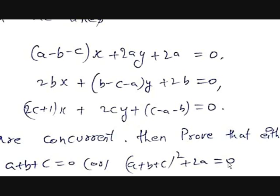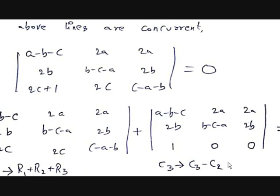To prove this, we take the determinant and use properties of determinants. If these lines are concurrent, the determinant of [a-b-c, 2a, 2a; 2b, b-c-a, 2b; 2c+1, 2c, c-a-b] must equal zero.